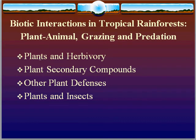We'll take a look at plants and herbivory, and whether herbivory is a big problem for plants. We'll look at plant secondary compounds — the chemicals in plants which help defend them against herbivory and predation. We'll look at non-chemical plant defenses, and finally at some examples of plant-insect interactions in a tropical rainforest.